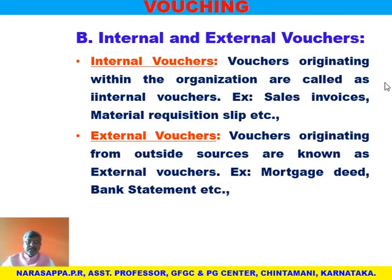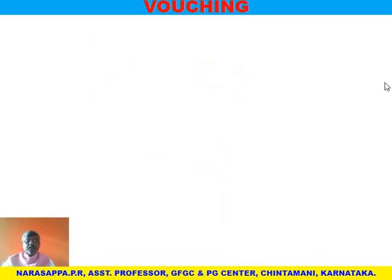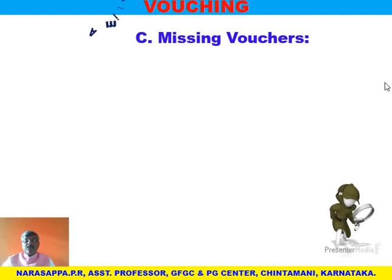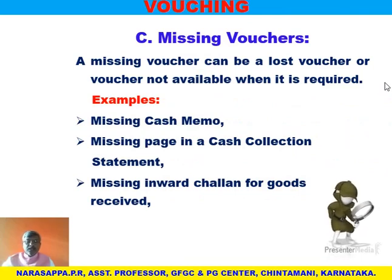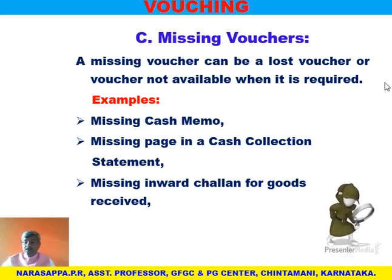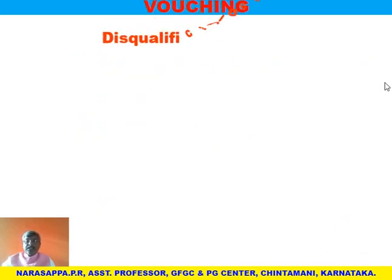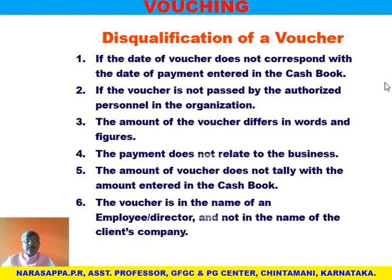The third type is missing vouchers. Whenever the auditor asks for a voucher but it is not available — it may be lost, stolen, or kept somewhere else — it is called a missing voucher. For example, a missing cash memo: the auditor asks for it but we don't have it; it may have been kept in some department. Similarly, a missing page in the cash collection statement or a missing invoice for goods received. They may be available later, but right now they are not available, so they are called missing vouchers.